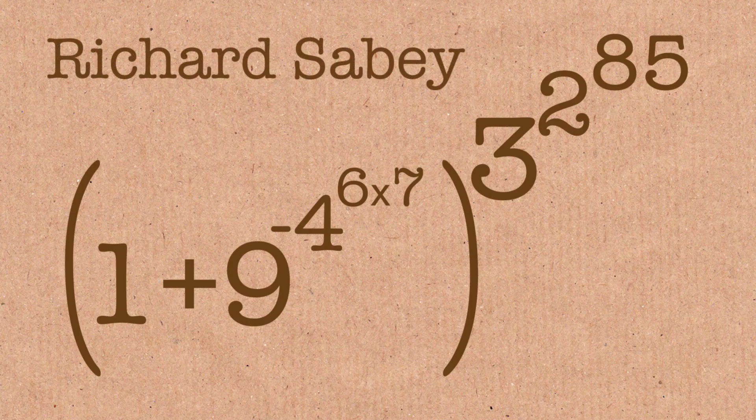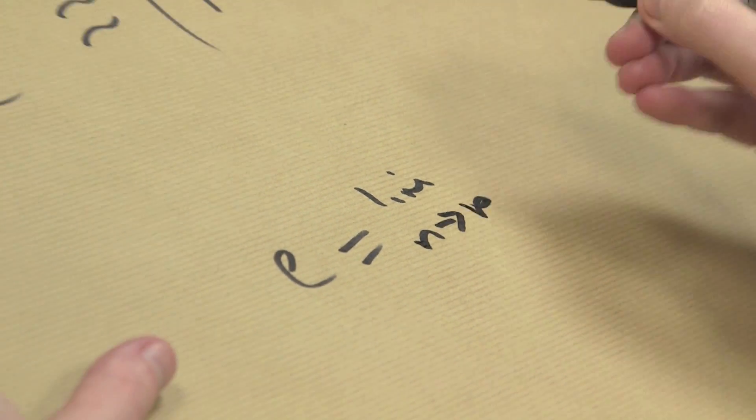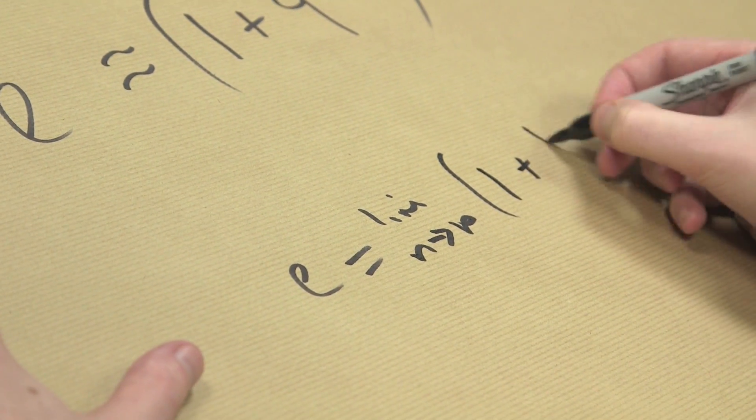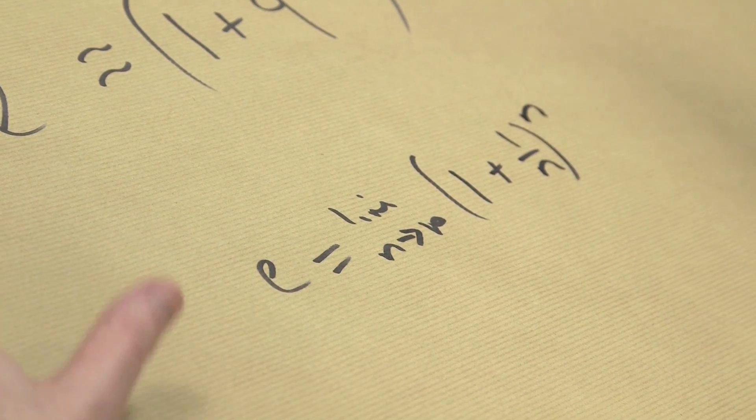This lovely little formula is incredibly accurate for e. How did that happen? It's beautiful. This formula is not a very old one — it was found in 2004 by a guy called Richard Saby. He did something very clever. The definition of e is the limit as n tends to infinity of one plus one over n, to the power n.